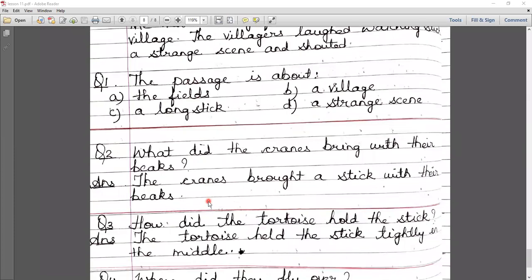Number two: what did the cranes bring with their beaks? The cranes brought - we use second form here because I already studied that in the past tense, when we are making a question, we use did plus verb first form. In the answer, we use verb second form. Here brought is the second form of bring. The cranes brought a stick with their beaks.